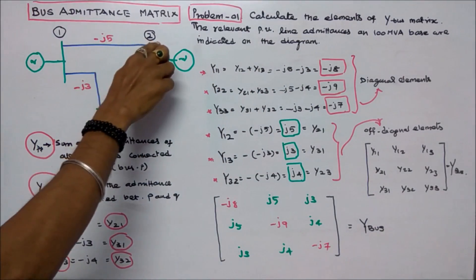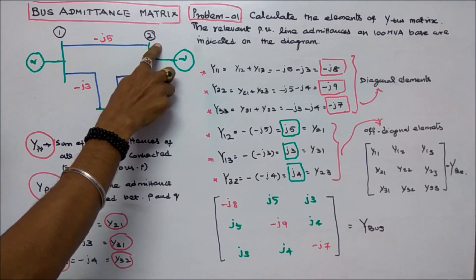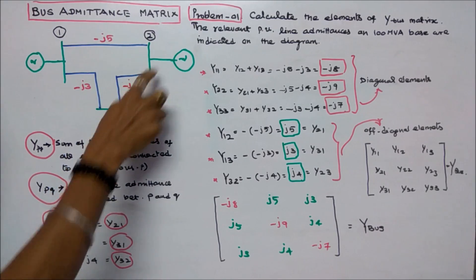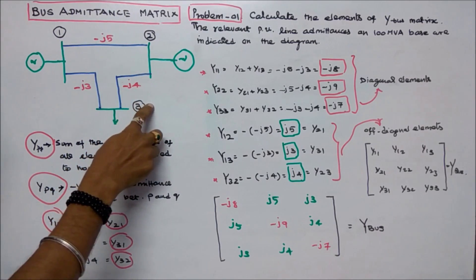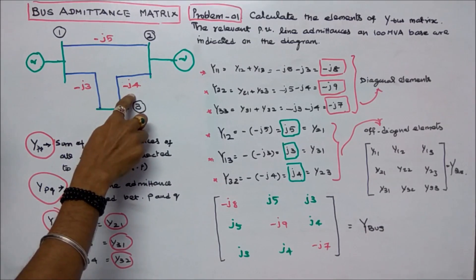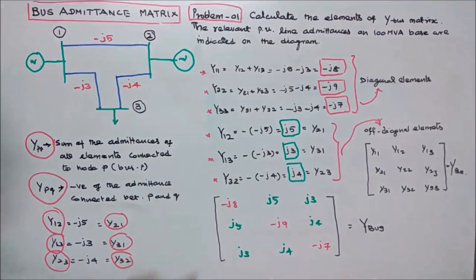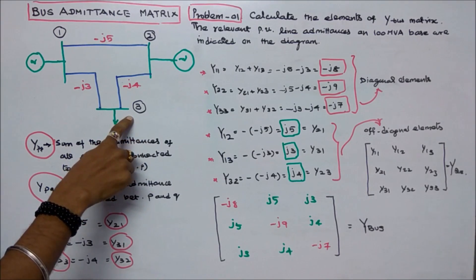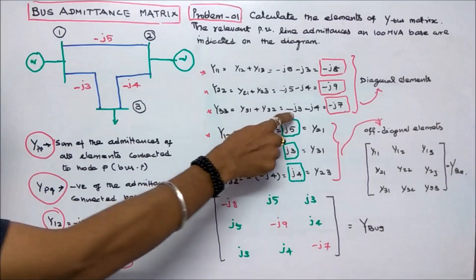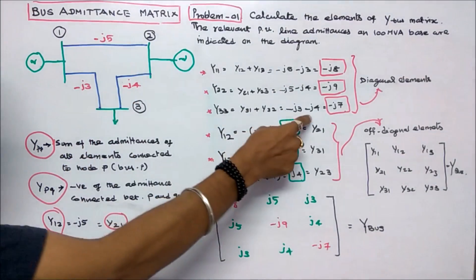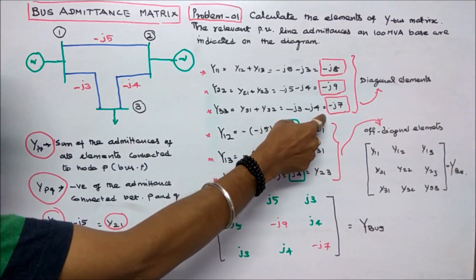Y22 is equal to Y21 plus Y23, that is minus J5 minus J4, which equals minus J9. Y33 is equal to Y31 plus Y32, that is minus J3 minus J4, which equals minus J7.